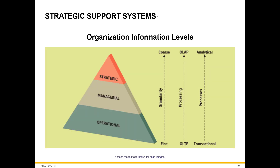Decision making at the strategic level requires both business intelligence and knowledge to support the uncertainty and complexity associated with business strategies. Moving up through the organizational pyramid, managers deal less with details and more with meaningful aggregation of information. In other words, managers move from finer information to coarser information.